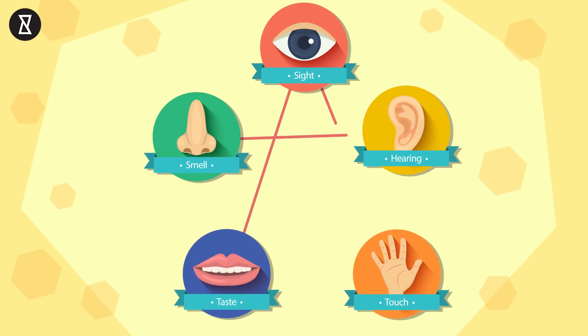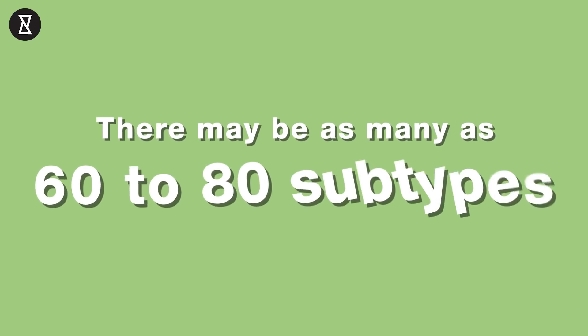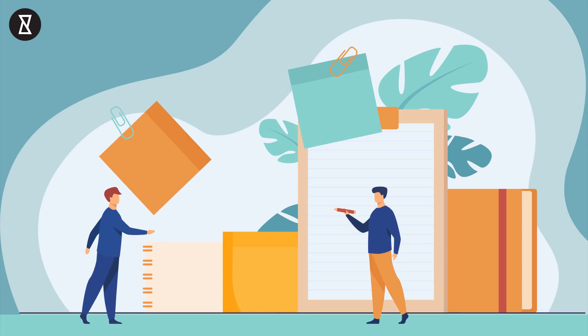Since synesthesia can involve any combination of the senses, there may be as many as 60 to 80 subtypes, but not all have been documented or studied, and the cause is unclear.